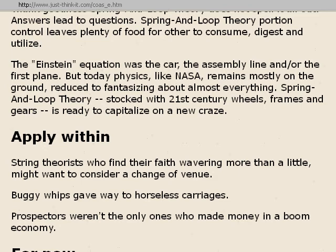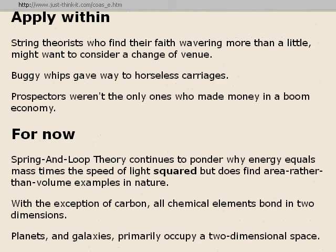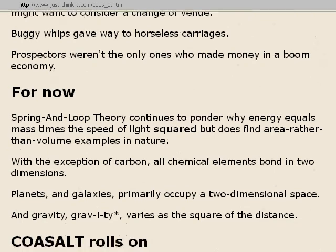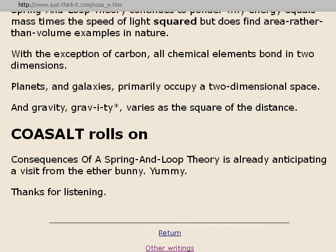Apply within. String theorists who find their faith wavering more than a little might want to consider a change of venue. Buggy whips gave way to horseless carriages; prospectors weren't the only ones who made money in a boom economy. For now, spring and loop theory continues to ponder why energy equals mass times the speed of light squared, but does find area rather than volume examples in nature. With the exception of carbon, all chemical elements bond in two dimensions. Planets and galaxies primarily occupy a two-dimensional space. And gravity varies as the square of the distance. Consequences of a spring and loop theory is already anticipating a visit from the ether bunny.